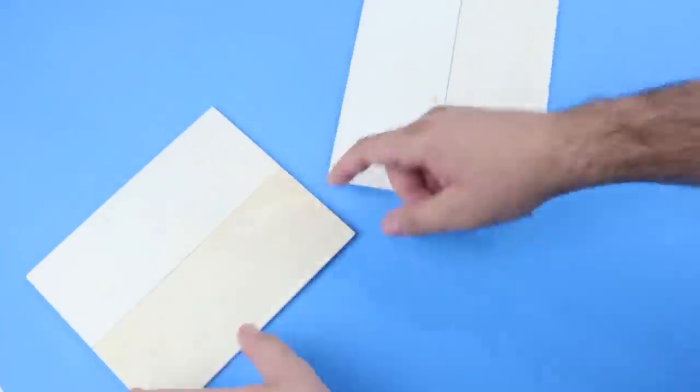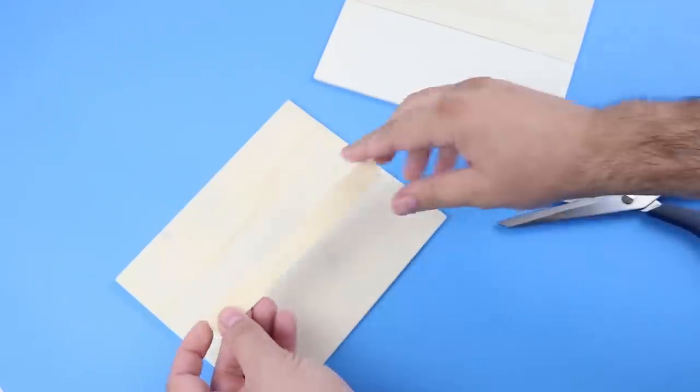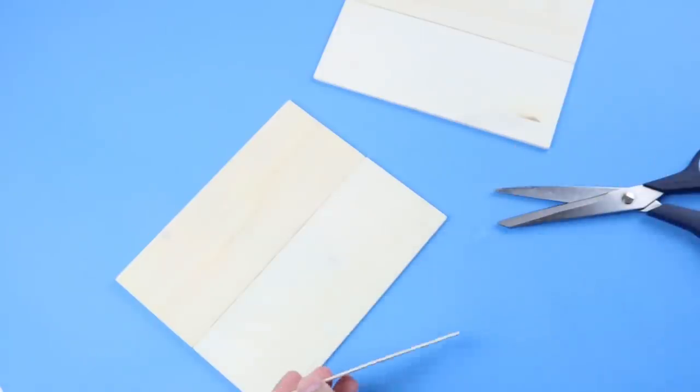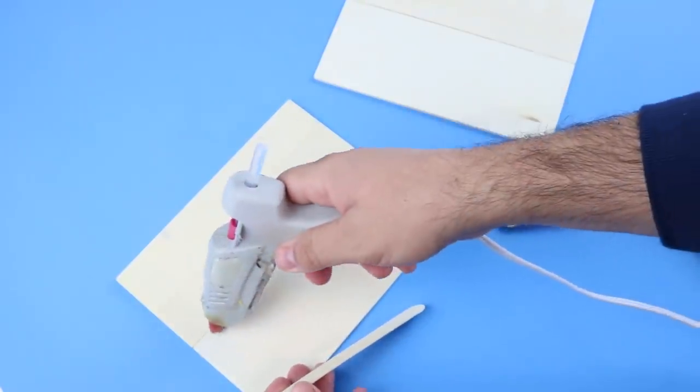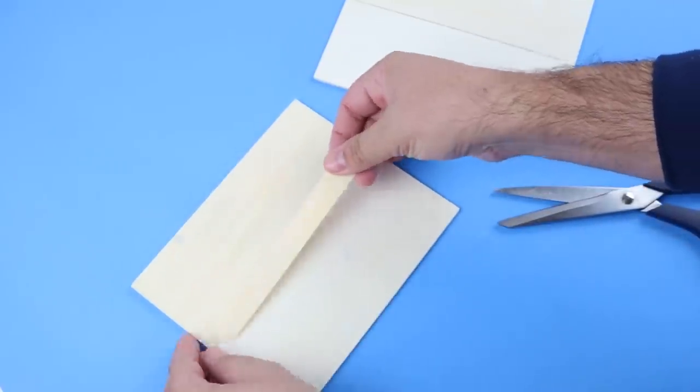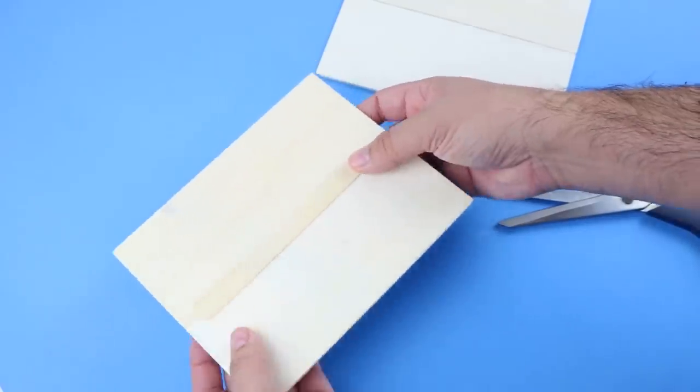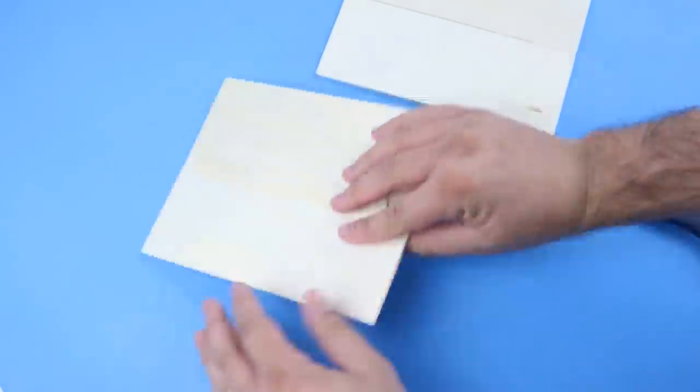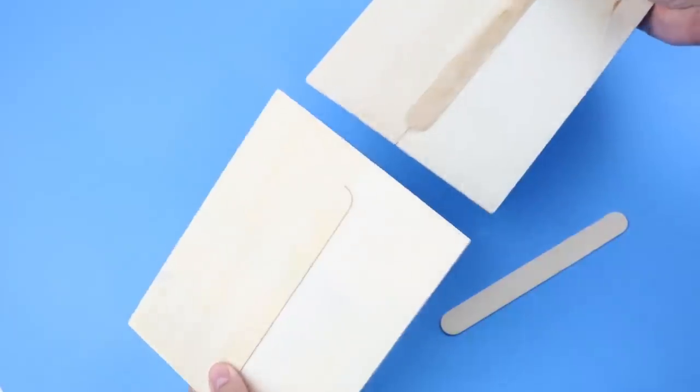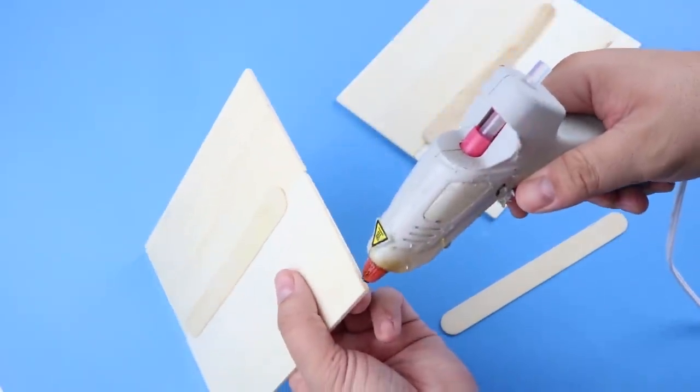I would recommend using something stronger for this project. With the dowels, there isn't a lot for them to glue to, so the hot glue can be a little bit more flimsy. So I definitely look at using maybe a wood glue or a E6000, you will have a longer drying time. But I think that would work a little bit better for you. The hot glue still worked pretty well for me, and I'm very satisfied with how it turned out.